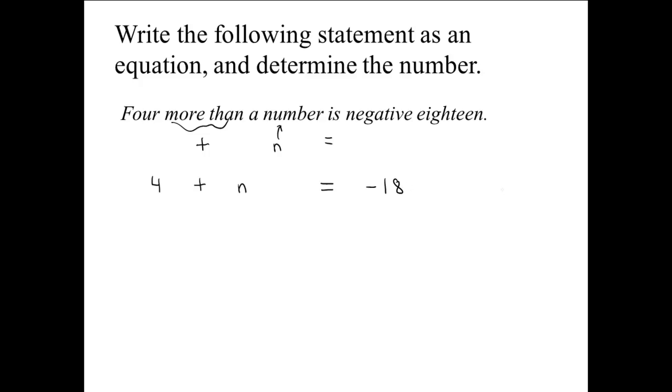To solve this equation, to find what n, the number is, we would have to subtract four from both sides of this equation. Four minus four is zero. We'd have zero plus n, which is simply n, equals negative 18 minus four.